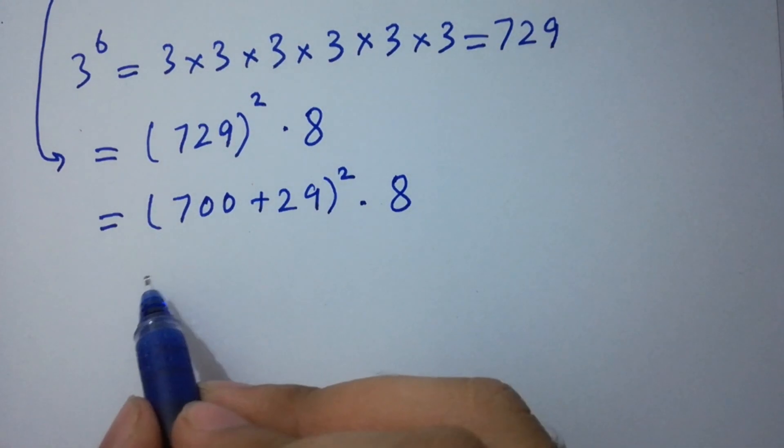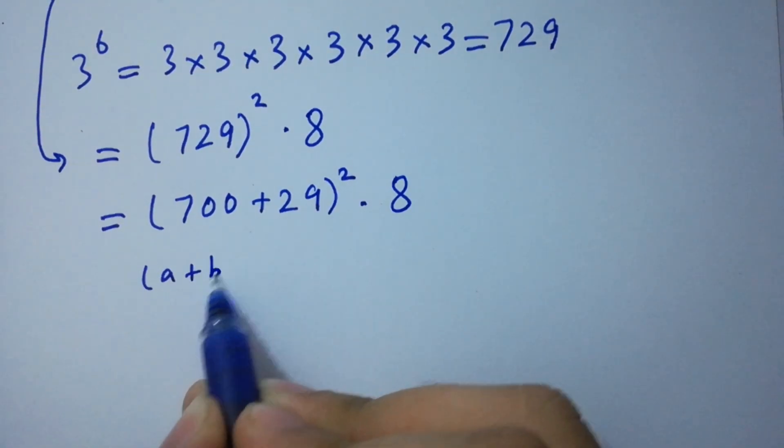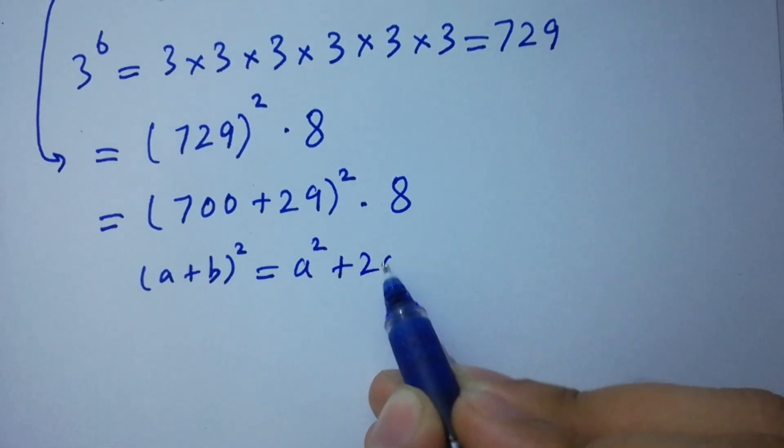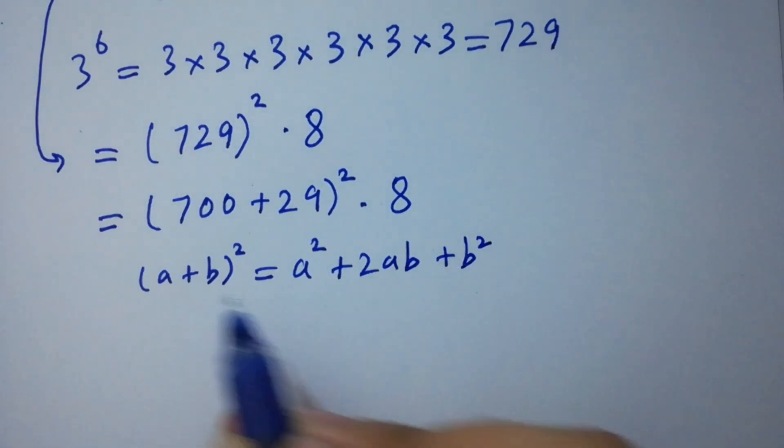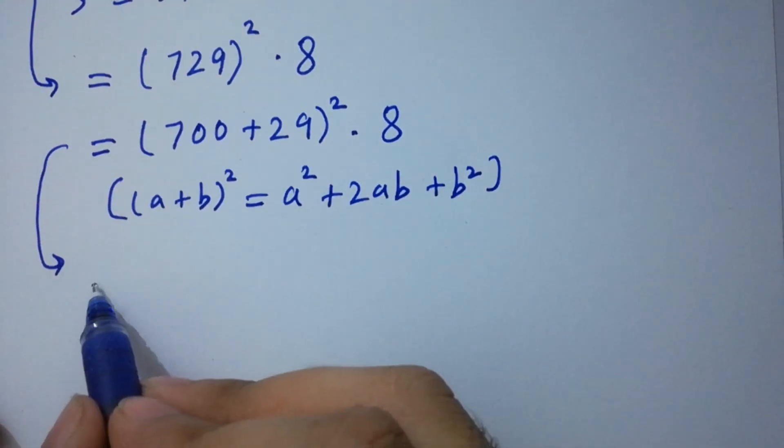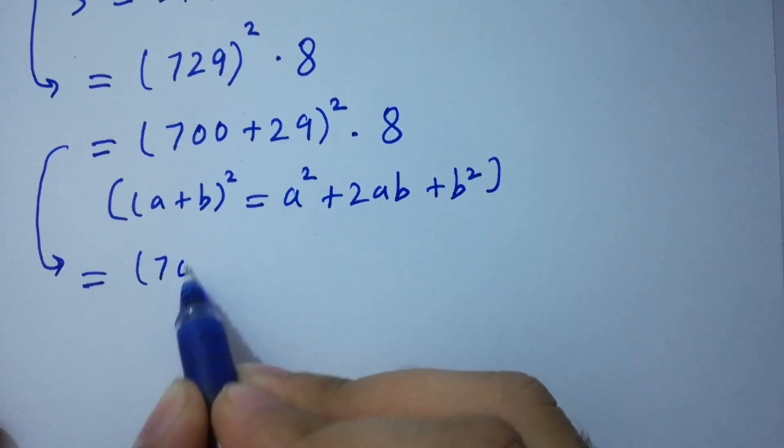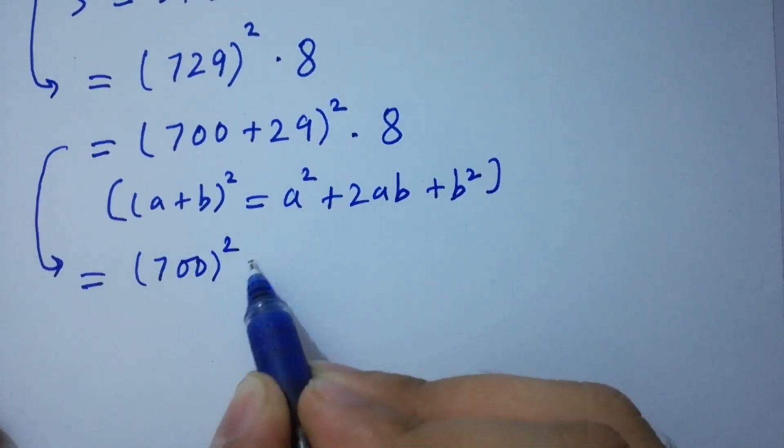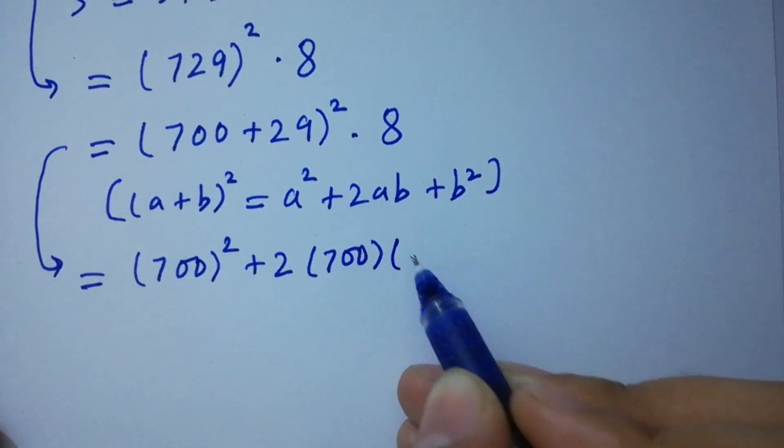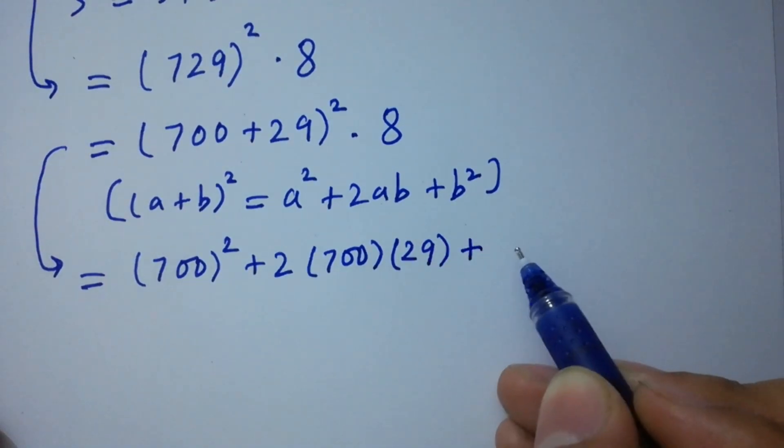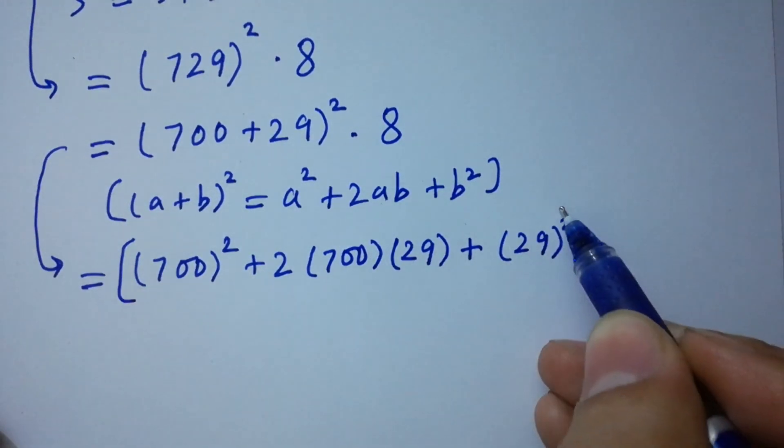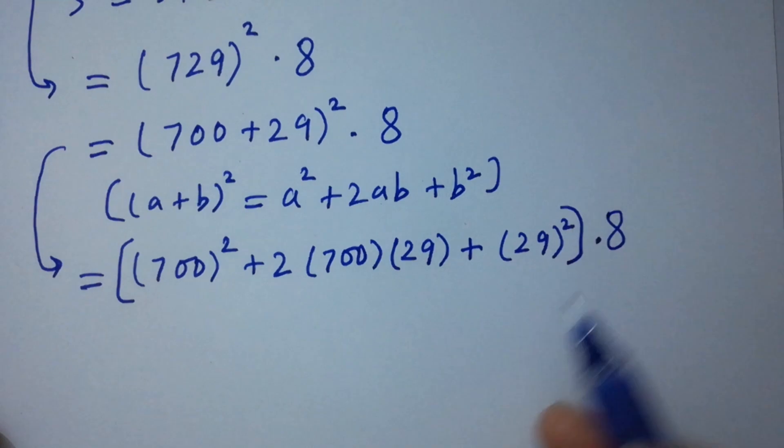We know the formula of a plus b whole square which is equal to a square plus 2ab plus b square. Here, we have 700 square plus 2 times 700 times 29 plus 29 square, times 8.